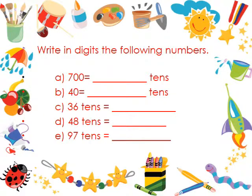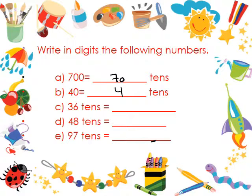We have here to write in digits the following numbers. 700 is equal to what? 70 tens. Why? Because 70 times 10 equals 700. 40 is equal to 4 tens. Because 4 times 10 is 40. 36 tens is equal to what? 360. Because 36 times 10 is equal to 360.